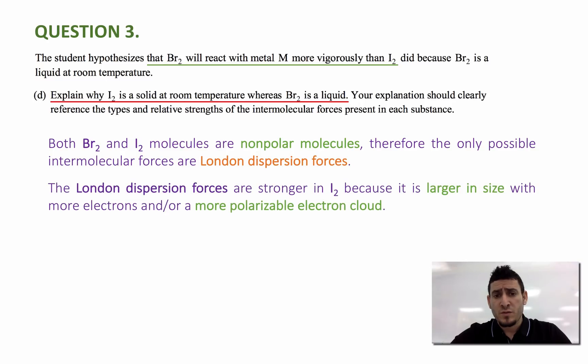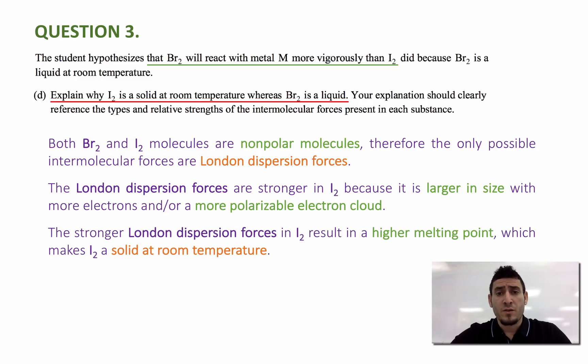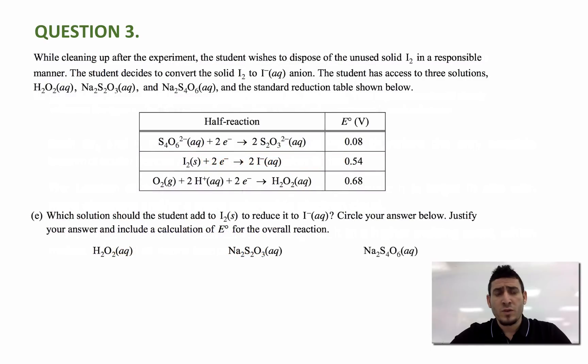The London dispersion forces are stronger in I2 because it's larger in size with more electrons and or more polarizable electron cloud. When size increases, the polarizability will increase and therefore the strength of the London dispersion force will be higher. The stronger London dispersion forces in I2 result in a higher melting point, which makes I2 a solid at room temperature.